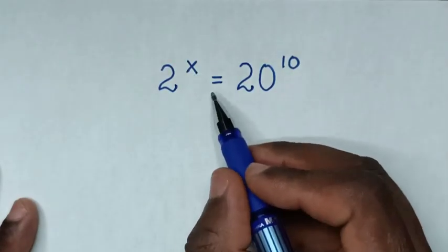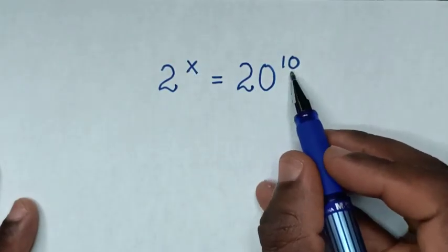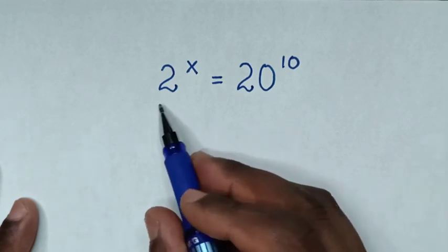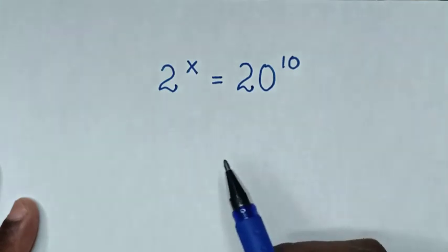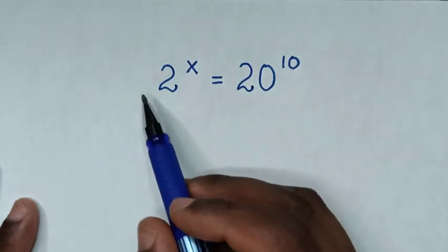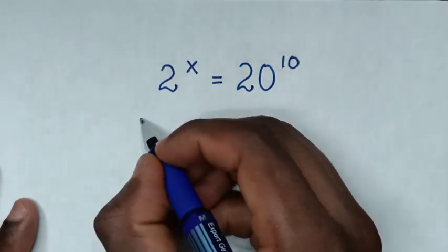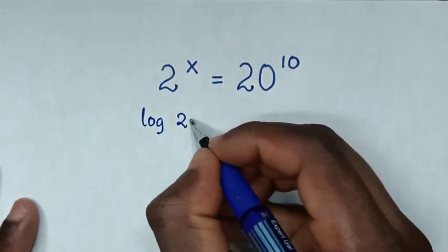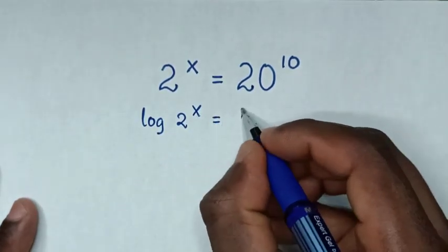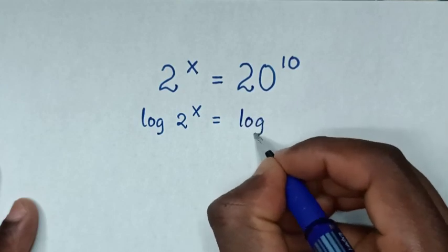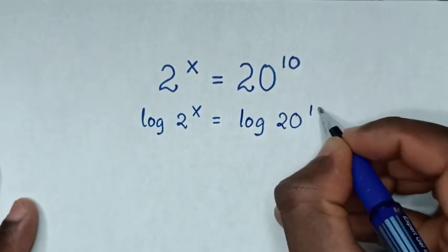How to solve 2 to the power of x equals 20 to the power of 10, to find the value of x from this equation. So first we'll apply log on both sides. Then it will be log of 2 to the power of x is equal to log of 20 to the power of 10.